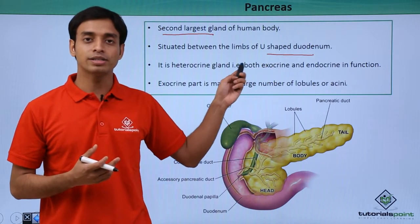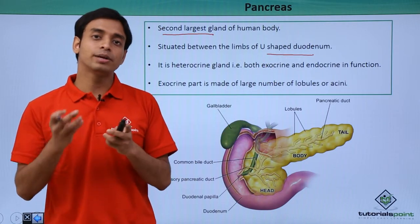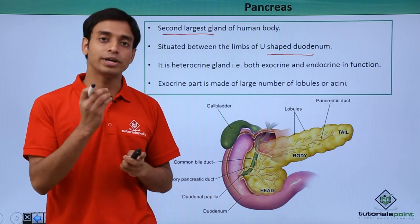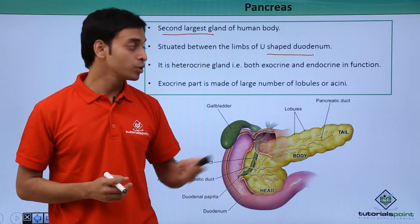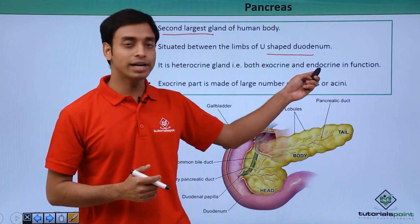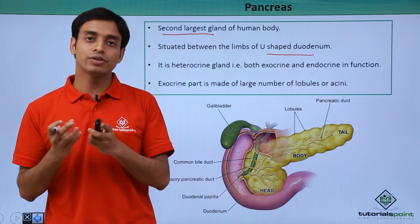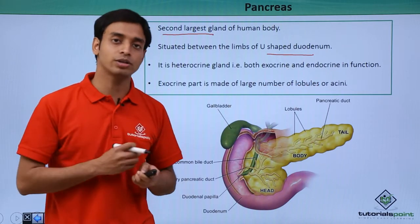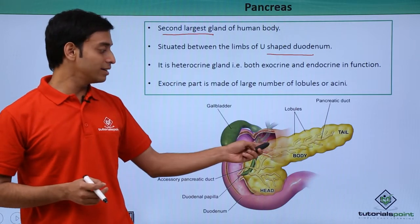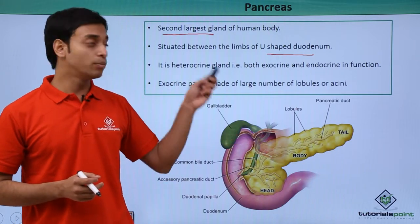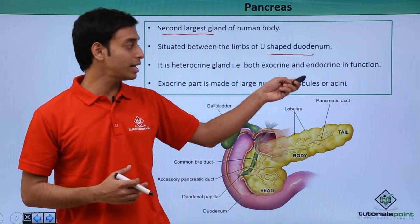Exocrine means that these glands secrete their secretions into a particular duct and not directly into the bloodstream. Endocrine glands, on the other hand, secrete their secretions directly into the bloodstream and not into a duct. The pancreas can act both as exocrine and endocrine in function.